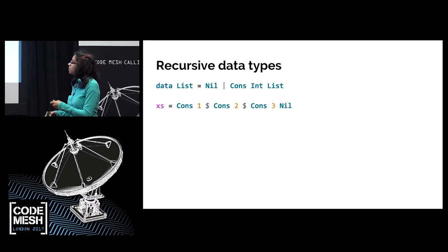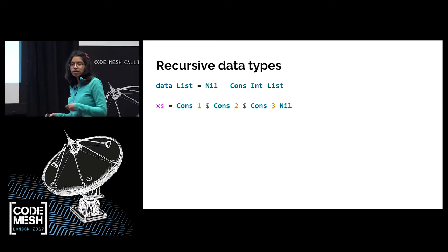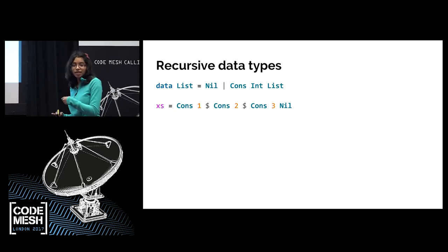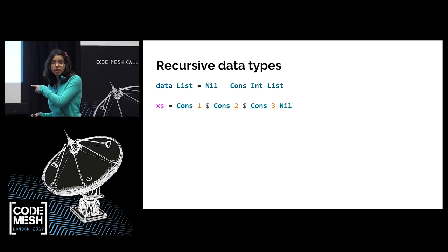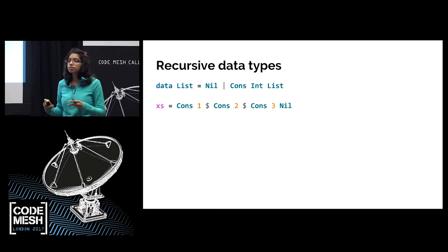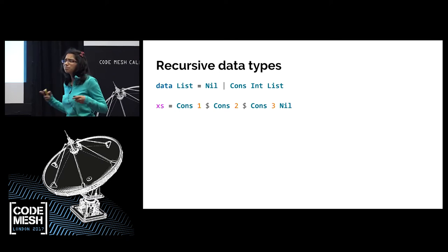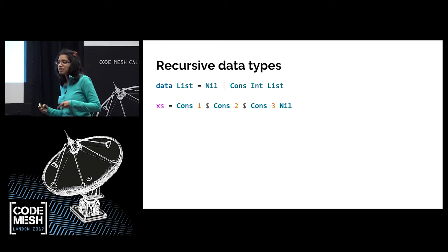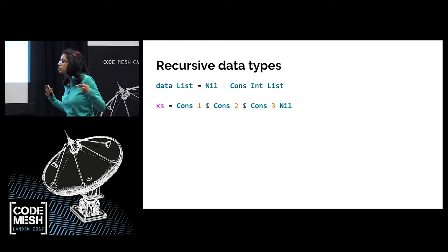I've got a question for you: if I gave you one of these lists, would it terminate? Could you be sure? No. Not in Haskell, anyway. In some languages you could — if you're working in Scala, this list would terminate. But Haskell is a lazy language, which means it doesn't evaluate things as soon as it gets them. This is a major problem — it means when you're writing functions, you're not quite sure if they're ever going to end if you're operating on a list.